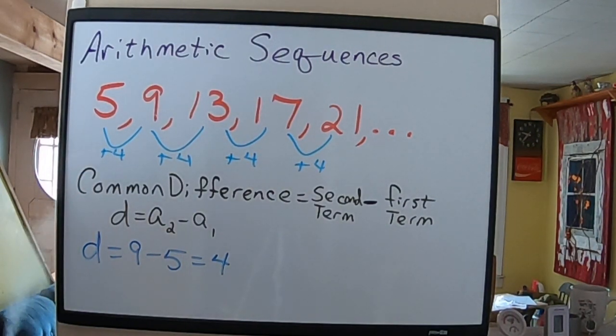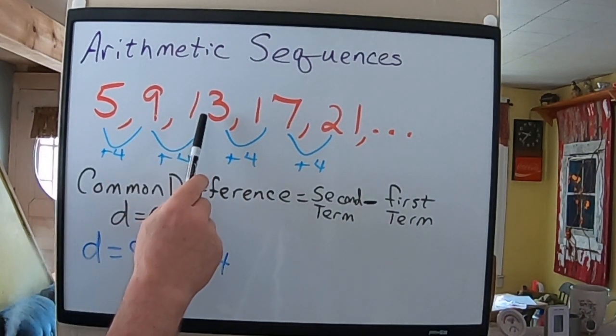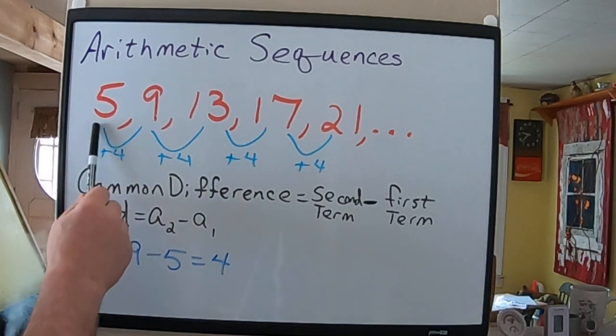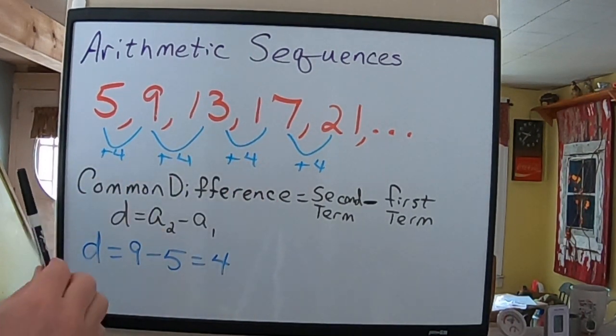Now, you can technically do that with any two consecutive terms. In other words, I could do 13 minus 9, or I could do 17 minus 13, but it has to be two consecutive terms, not this one and that one. It has to be two consecutive.